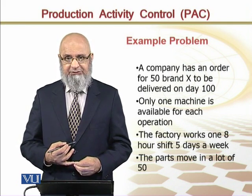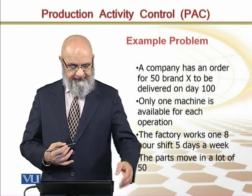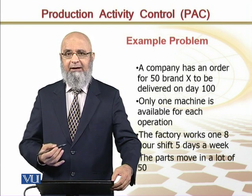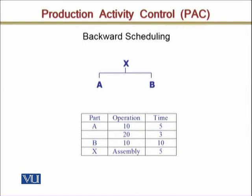We have 50 units to produce and move, and we have to do backward scheduling. We have developed this product — the end product is X, and there are two parts: A and B. We have to assemble and produce X. This is basically a bill of materials. Part A has two operations: operation 10 and operation 20.